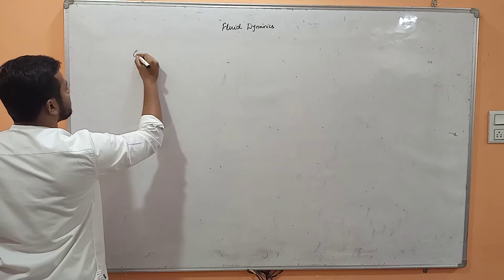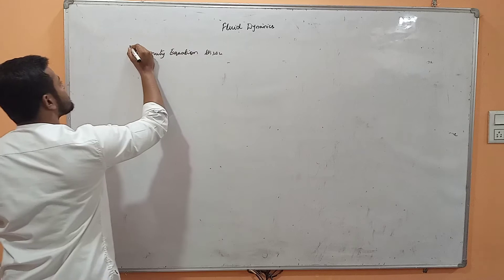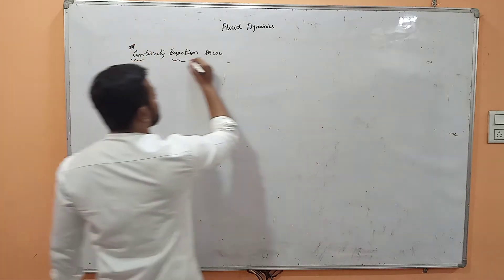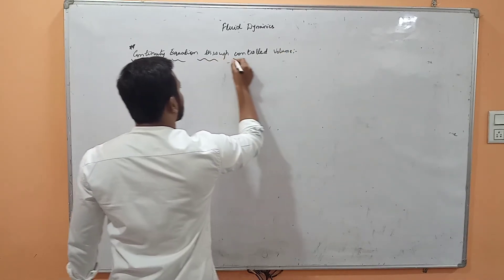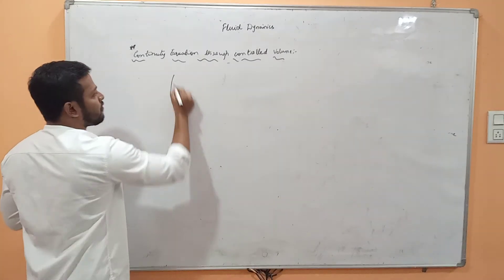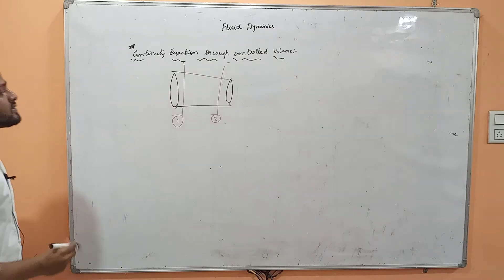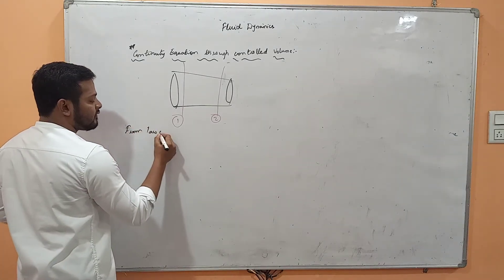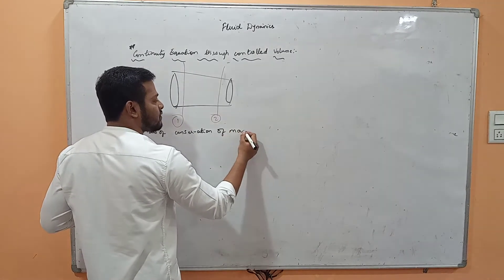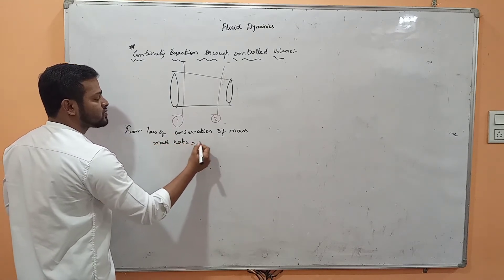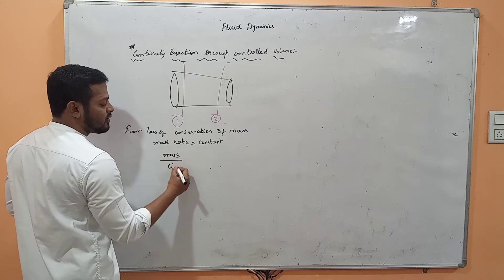The next topic is the continuity equation through a control volume, which is usually asked in short answers for 2 or 3 marks. Consider a non-uniform pipe section with section 1 and section 2. From the law of conservation of mass, mass rate is constant. Mass rate means mass by time equals constant.